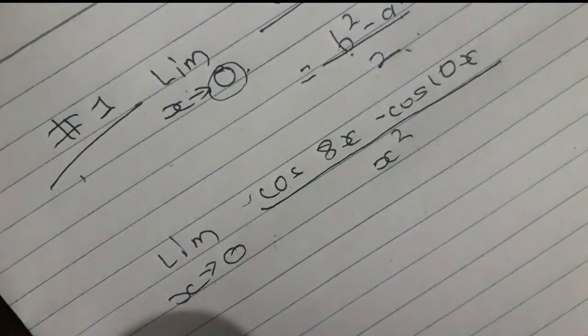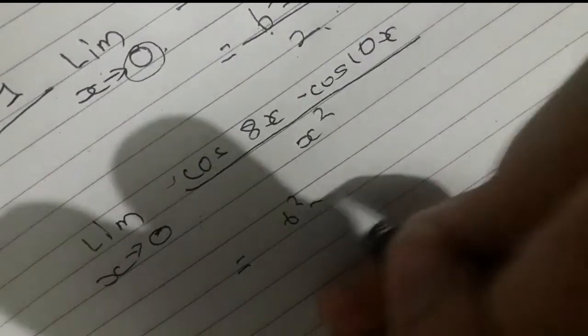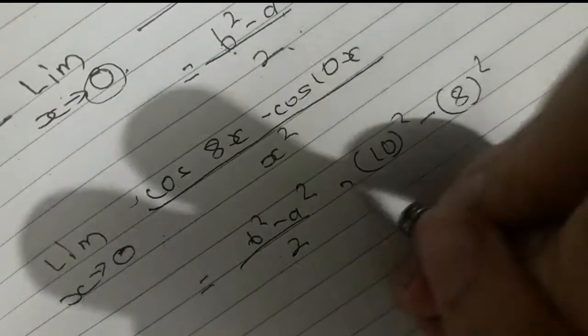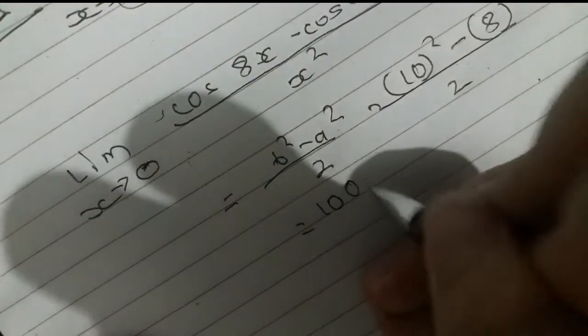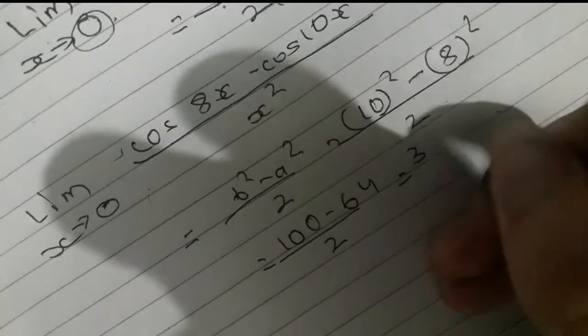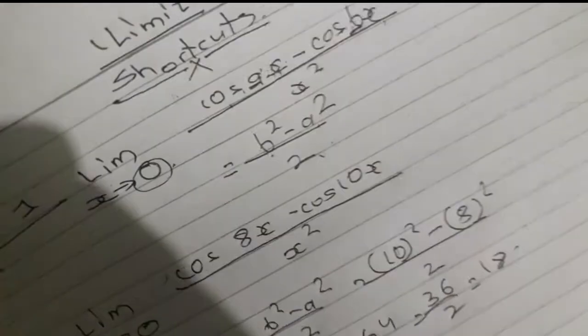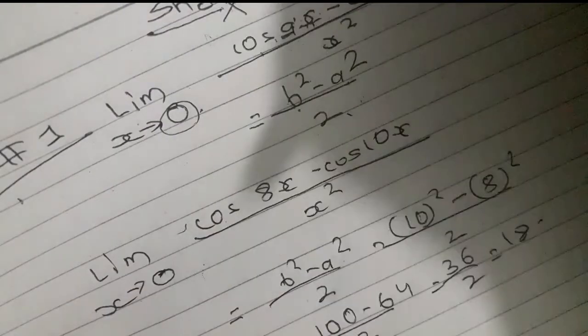Example: limit x tends to 0, (cos 8x minus cos 10x) divided by x squared. Using the shortcut pattern — cos 8x minus cos 10x by x squared — you can directly apply the formula. Here a is 8 and b is 10, so the answer is computed directly using the shortcut. Do you think it's a good one? It's a good one. Number one shortcut is done here.